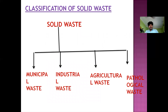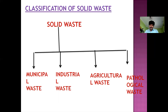What are the types of solid waste? Solid waste can be divided into four types: municipal waste, industrial waste, agricultural waste, and pathological waste.